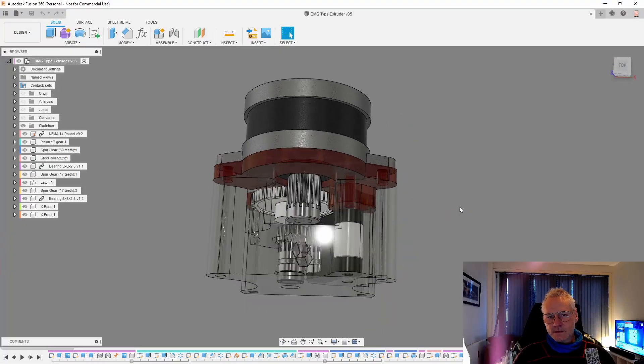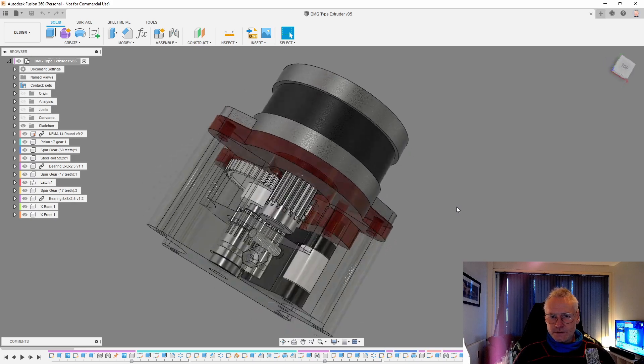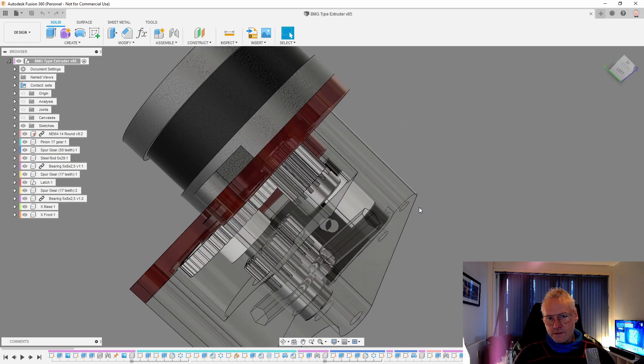Here you can see the CAD model. So this is a 3 to 1 gearing using all the Bondtech gears.